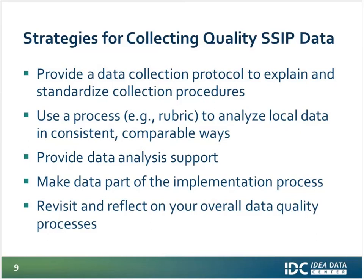A second strategy is to use a process such as a rubric to analyze local data in consistent or comparable ways. This is a way of capturing local data from different data sources on a more aggregate level — for example, grouping students moving into a proficient achievement category — to combine data from different benchmarks into more global categories. The specific data at the local level can be maintained for local decision-making, while the broader analysis shows comparable information needed at the state level.